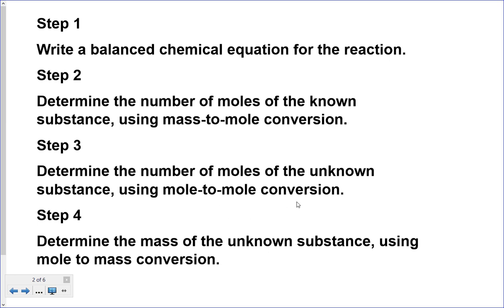The middle step is the mole-to-mole conversion. We figure that out from the balanced chemical equation — how many moles of what we have to get the moles of the substance we're trying to find. The last step: if they want the answer in moles, we're done. But if they want the answer in grams, then we have to do moles to grams. So: balanced equation, grams to moles, moles to moles from the balanced equation, and moles to grams at the end — those are the four steps.